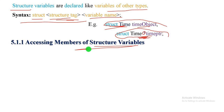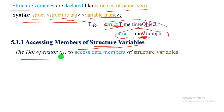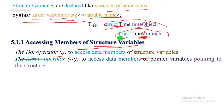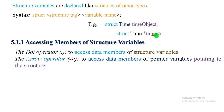After we declare and assign a value, how can we access the member of a structure variable? We use the dot operator. The dot operator is used to access the data member of a structure variable. For example, 'time object dot hour' — we use the dot operator to access the member.